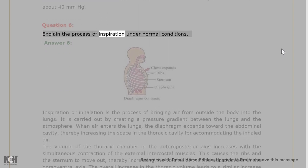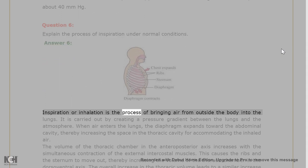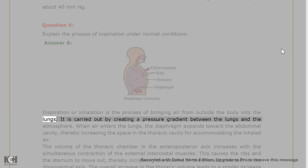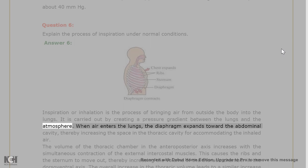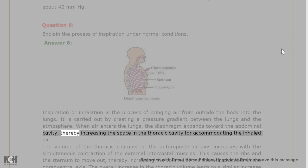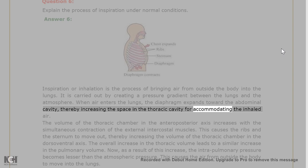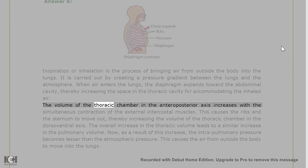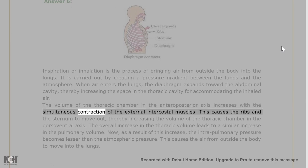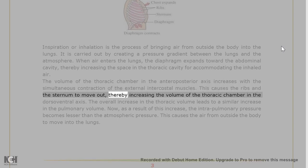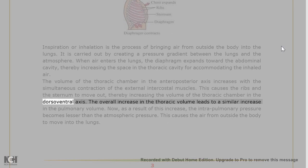Question 6: Explain the process of inspiration under normal conditions. Answer 6: Inspiration, or inhalation, is the process of bringing air from outside the body into the lungs, carried out by creating a pressure gradient between the lungs and the atmosphere. When air enters, the diaphragm expands toward the abdominal cavity, increasing space in the thoracic cavity. The volume of the thoracic chamber increases in the anteroposterior axis with contraction of the external intercostal muscles, causing the ribs and sternum to move out, increasing volume in the dorsal-ventral axis.